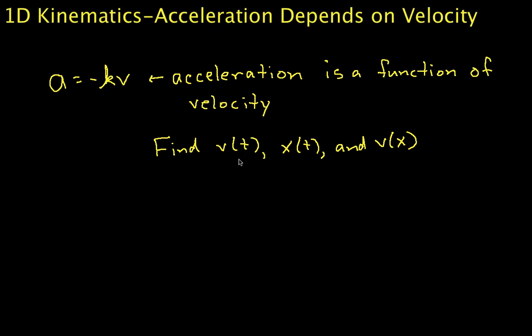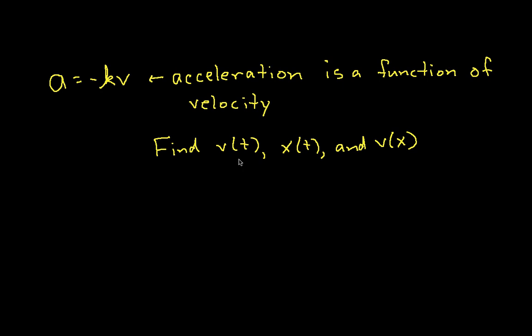Hello and welcome to this video in which we will examine the relationship between position, velocity, and time for a particle whose acceleration is a function of velocity, using a simple example. The equation we have here, where the acceleration is equal to some negative constant times velocity, is actually a simple model for what happens with a shock absorber, where the force on the piston is negatively proportional to its velocity, and the acceleration is proportional to the force.